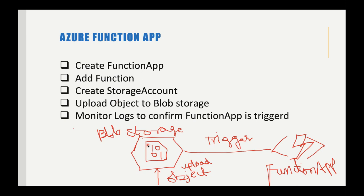Whenever we receive a new event, this will be automatically triggered and will invoke some other process. For example, when we receive data from IoT streams, or whenever we place a new file on Azure Blob Storage, we can trigger the Function App automatically. Internally, that Function App will trigger another process — such as a data processing notebook in Azure Databricks.